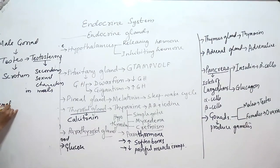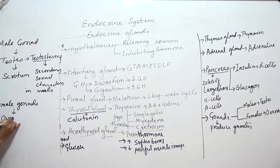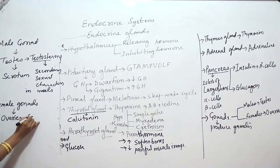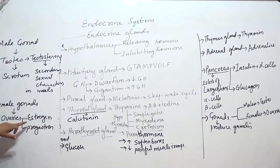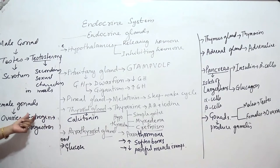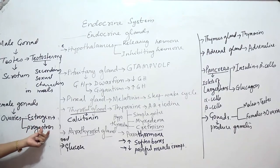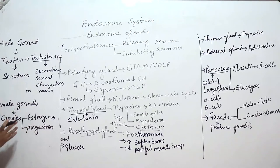The female gonads are the ovaries. The ovaries secrete the hormones estrogen and progesterone. Estrogen regulates the development of feminine characteristic features, and progesterone helps in changes in the uterus during the menstrual cycle and pregnancy. These are the functions performed by estrogen and progesterone secreted by the ovaries.